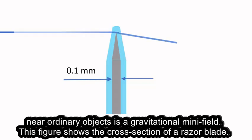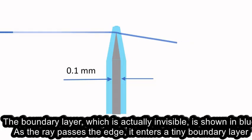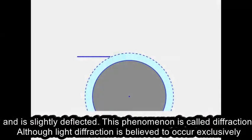This figure shows the cross-section of a razor blade. The boundary layer, which is actually invisible, is shown in blue. As the ray passes the edge, it enters a tiny boundary layer and is slightly deflected. This phenomenon is called diffraction.